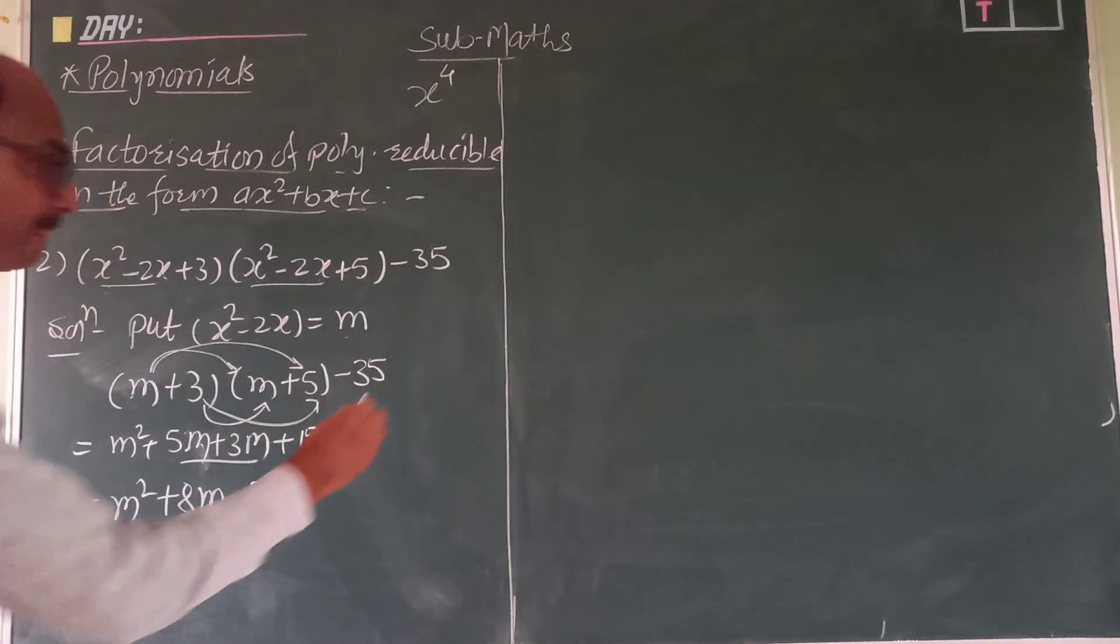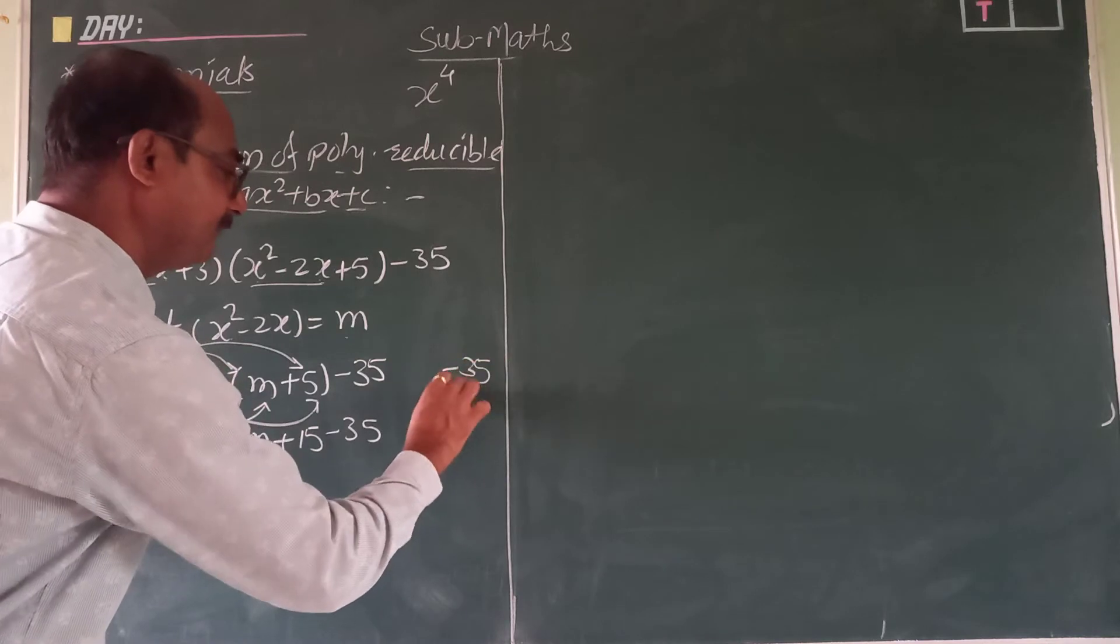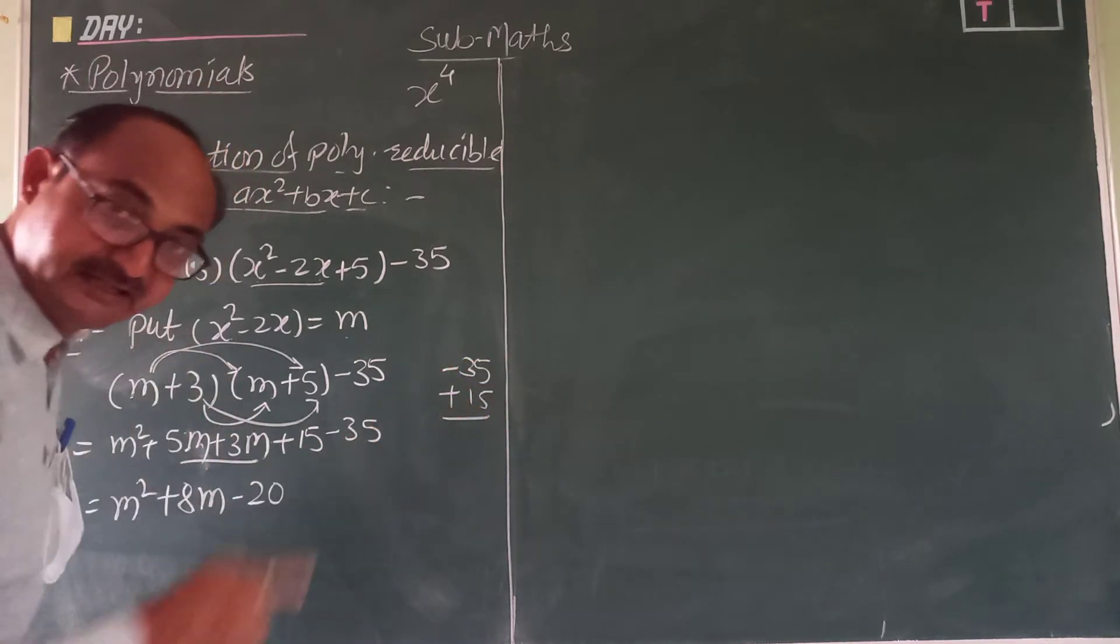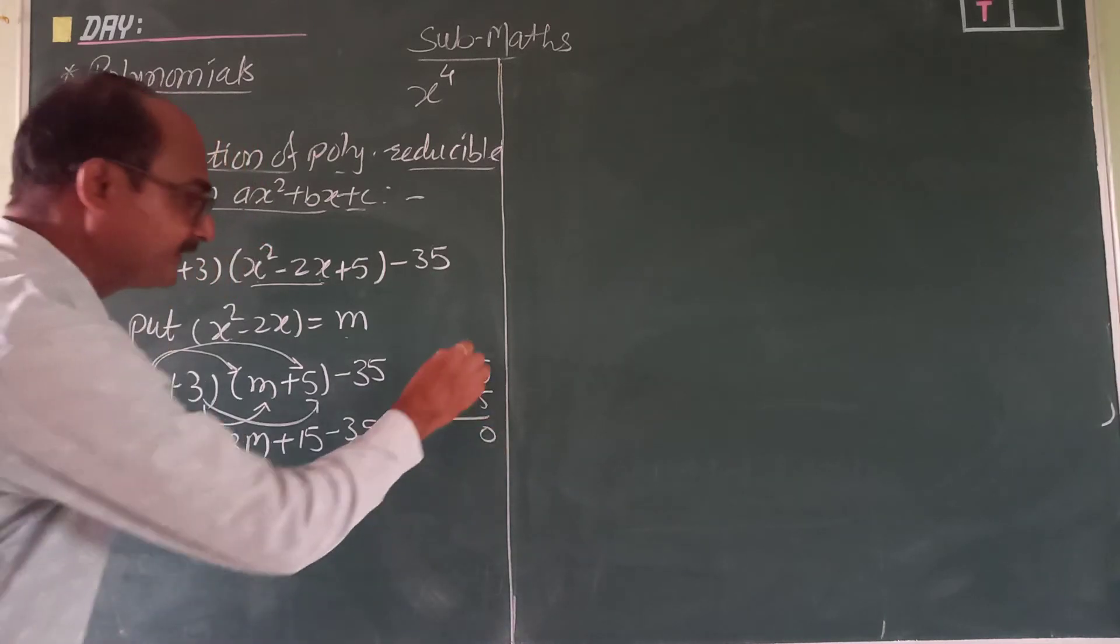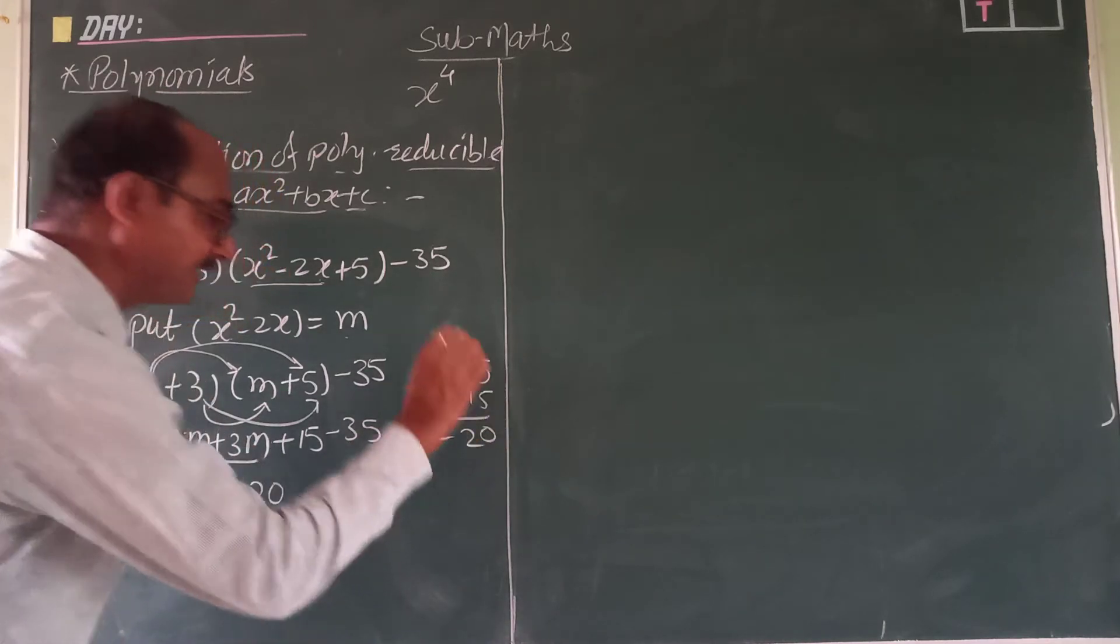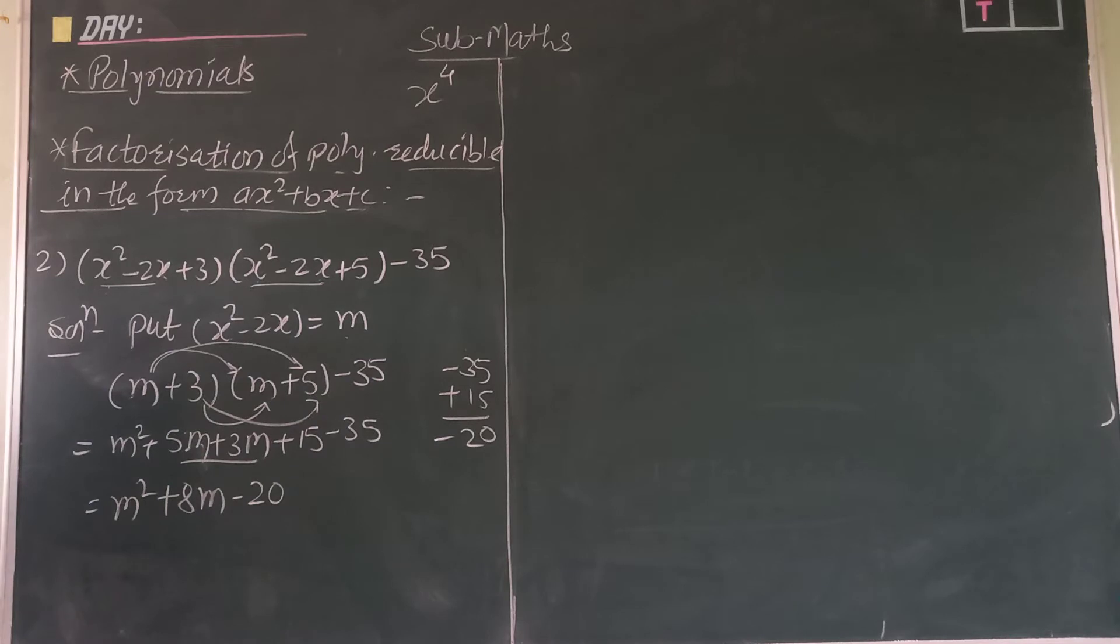Greater number side minus 35 plus 15. Signs are different means subtraction is there. So 5 minus 5 is 0, 3 minus 1 is 2, and greater number sign minus.